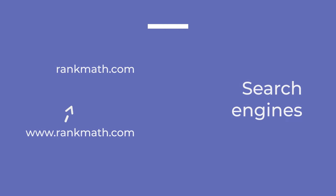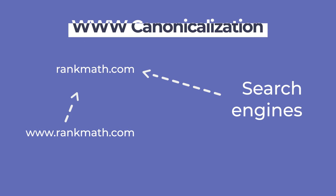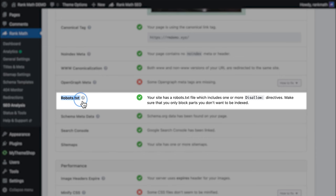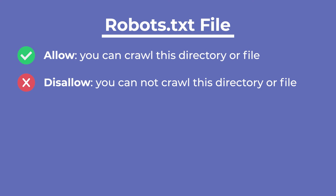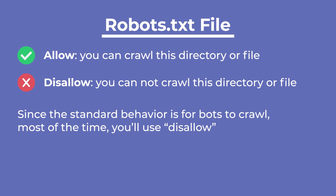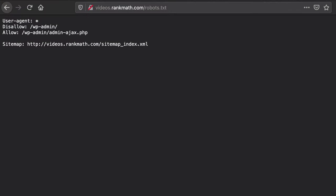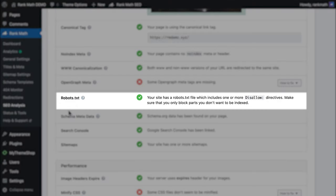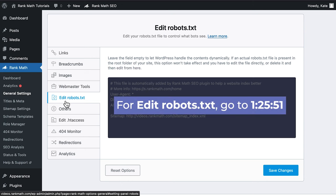The www canonicalization test checks if URLs with www direct to URLs without it, or vice versa — Google considers URLs with and without www to be two different pages, so you need to make it clear which is the true URL to avoid duplicate indexing. Rank Math looks for a robots.txt file at the root of your web server, which directs search engines on what they should or should not crawl, using allow and disallow commands. In WordPress, disallow is used for the administrative area by default. The Search Console test checks if the website is connected to Google Search Console. The last advanced SEO test checks if your website has a sitemap file.